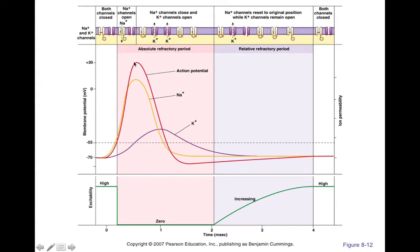Right around the same time voltage-gated sodium channels close, voltage-gated potassium channels open. There's another threshold which is the voltage at which voltage-gated potassium channels open. When these potassium channels open, it allows potassium to flow — potassium leaves the cell because it's in higher concentration inside and lower concentration outside. So we have an efflux of potassium, and because we're removing positively charged potassium ions from inside the cell, it makes our voltage more negative.